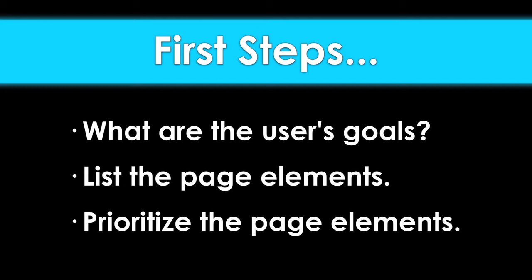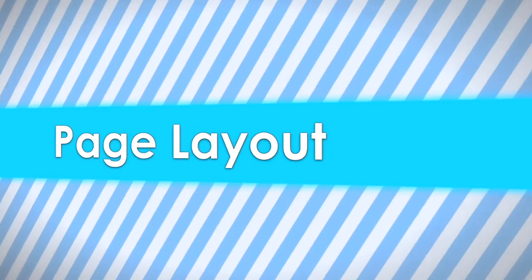Next, create a list of what needs to be on the page — in other words, what buttons, pieces of text, and widgets will help the user accomplish their goals? Last but not least, prioritize your list by what's most important. Not all page elements are created equal, so you'll want to emphasize the most common actions and de-emphasize the ones that are less commonly used.